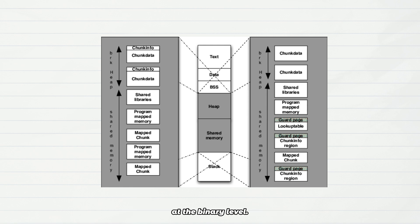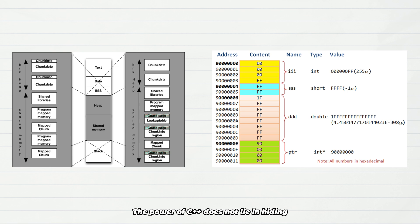The power of C++ does not lie in hiding low-level details; it lies in daring to expose these memory structures to you. If you truly want to write high-performance C++ code with predictable object layouts that align with the CPU and cache, you must understand what an object really looks like in memory.